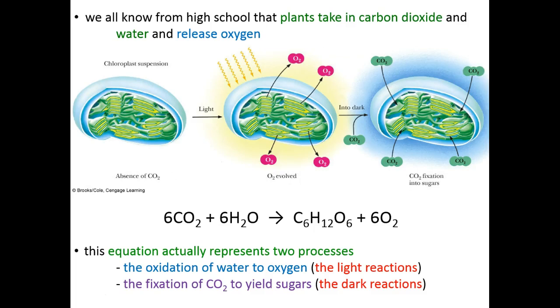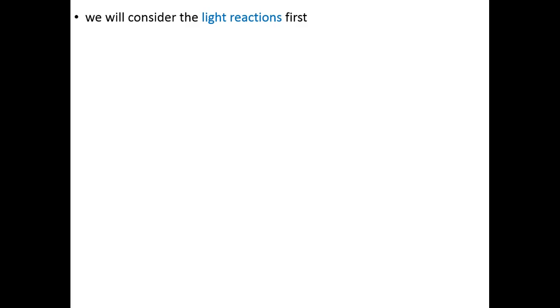Schematically, we can represent those two phases of photosynthesis this way. Here is the chloroplast, the photosynthetic organelle of plants. In the light reactions, chloroplasts absorb light radiation energy and use it to split water into oxygen — which is released — and protons and electrons, which are harvested. Those protons and electrons, and the energy from them, are combined with carbon dioxide in the dark reactions to yield glucose. We'll follow photosynthesis in this order. The dark reactions will be covered in the final lecture.